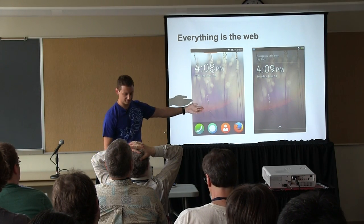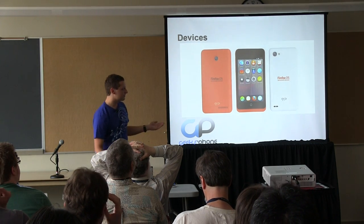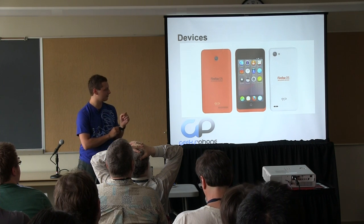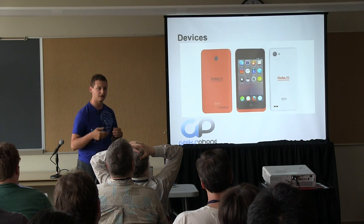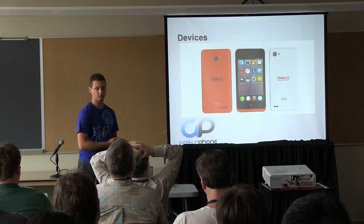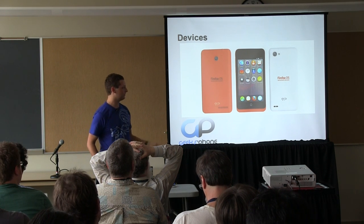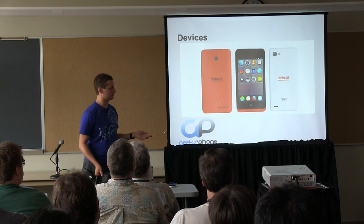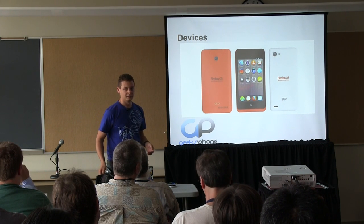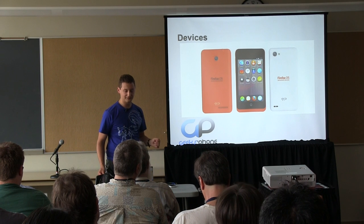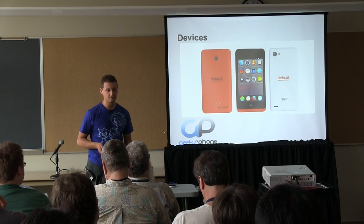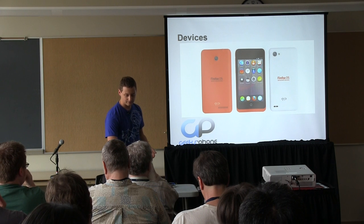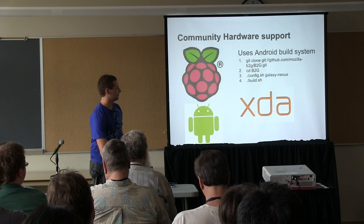Everything is the web. This is an example of the home screen and the lock screen. We've partnered with a company called Geeksphone out of Spain — they're producing developer devices. If you're interested, you can go to their website, order a device, and get it delivered. This one is called the Keon — it's the mid-level device. They're very inexpensive compared to other things on the phone market, but the experience you get is definitely top notch. Don't think that because it's inexpensive you're going to get a subpar experience — it's definitely responsive, snappy, and useful.